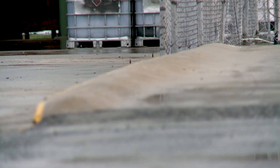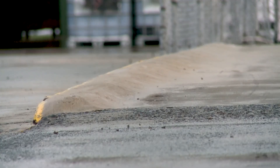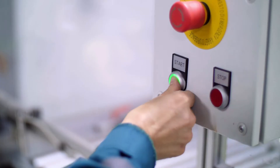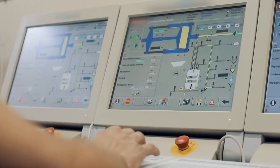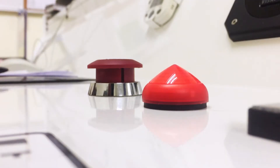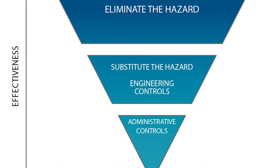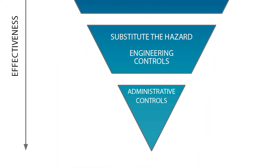Secondary containment, such as bunding, can be used in conjunction with automated shut-off systems – meaning there is no need for a person to be present operating the equipment to shut it down. Administrative controls are the least effective type of controls, as they rely on people doing the right thing and taking care at all times, introducing the risk of human error.